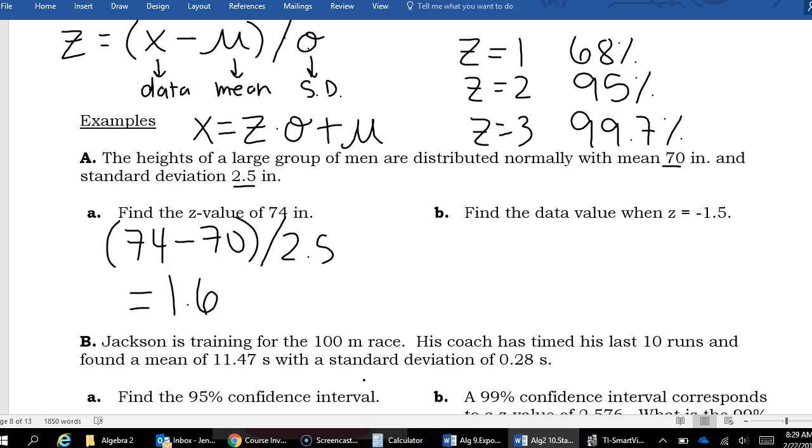Well, let's do some backwardsing. If I have a data value that is 1.5 standard deviations below the mean, that's a Z value of negative 1.5, what is that data value? So I'm going to use my X equals formula for that one. I have my Z value of negative 1.5 times my standard deviation was 2.5 plus my mean was 70.